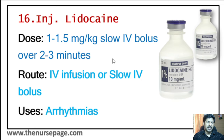Amiodarone is given as a loading dose followed by a maintenance dose. Twenty-fifth medicine is tranexamic acid. Emergency uses include control of bleeding in surgery, trauma, and postpartum hemorrhage. Route is IV injection or IV infusion. Dosage is 1 gram IV over 10 minutes, followed by a maintenance infusion of 1 gram over 8 hours. It comes as an ampoule containing 500 milligram.